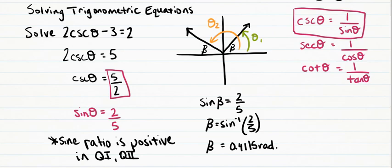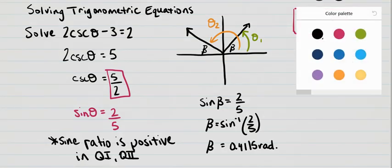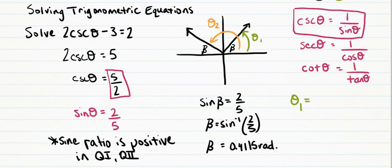Using that value on our diagram, we get that theta 1 is exactly equal to beta which is 0.4115 radians, and theta 2 is pi subtract 0.4115 radians, so we get pi minus 0.4115, and theta 2 ends up being approximately 2.7301 radians.